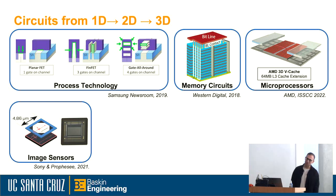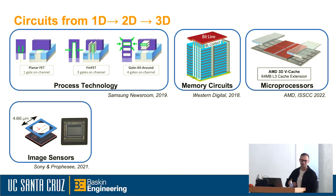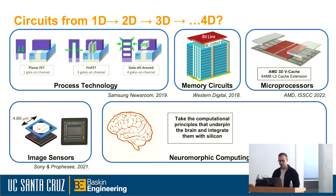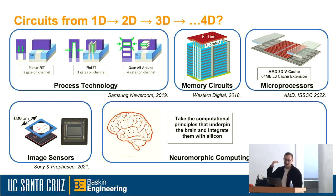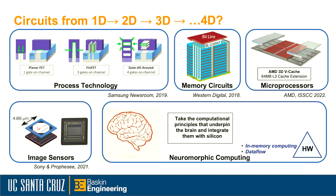My non-rhetorical question is: what comes after 3D? 4D — how can we exploit time as another dimension to make computation more effective? In a way, that's what the brain does. So we're trying to take the computational principles that underpin the brain and integrate them with silicon and the code that needs to run on said silicon.